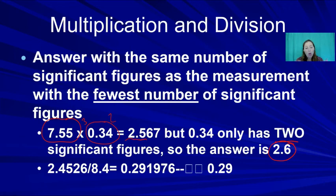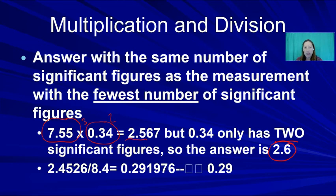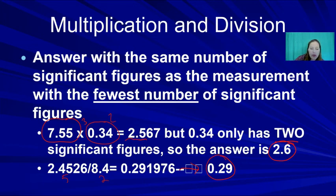Think of it this way: if someone owed you $2.567 but could only round to 2 digits, you'd want $2.60, not $0.07. That's why we keep the significant figures in the right place. For a division example with 5 sig figs divided by 2 sig figs, round to 2 significant figures — the answer becomes 0.29. Don't forget to include units in your final answer.